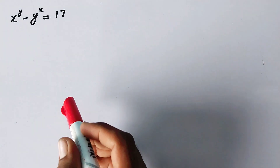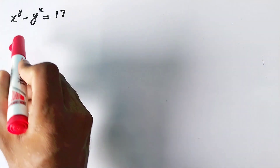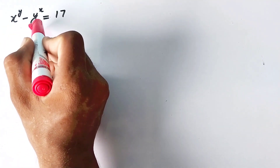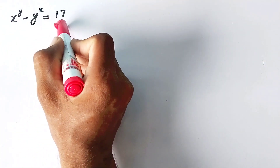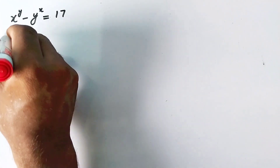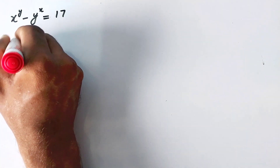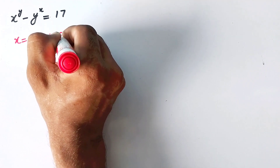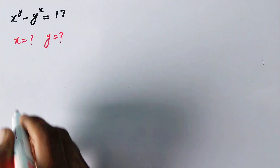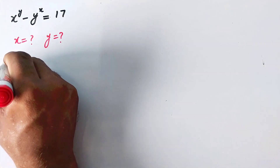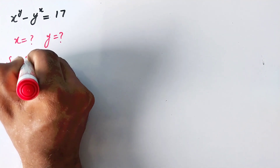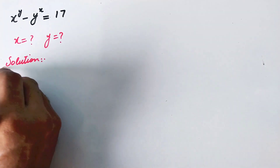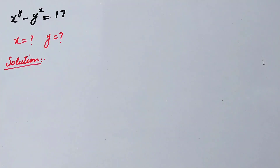Hello everyone, today we are going to solve x raised to the power y minus y raised to the power x is equal to 17, and we have to find the value of x and y. Let's see the solution.